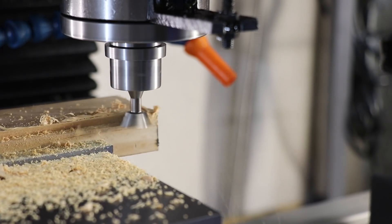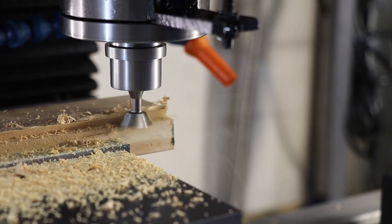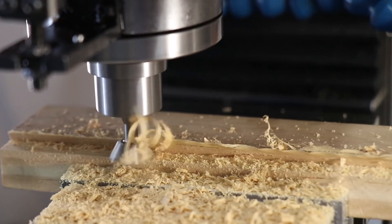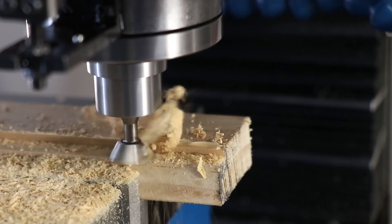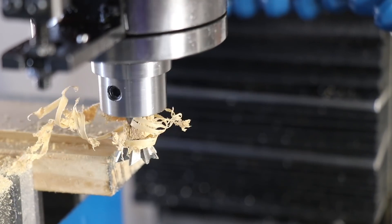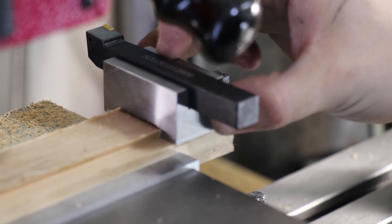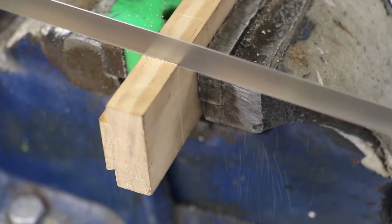The milling machine does a pretty good job at this, but I'm sure you could get the same results using a router table. With the tool fitting on nicely, I'll cut the wood to the correct length.